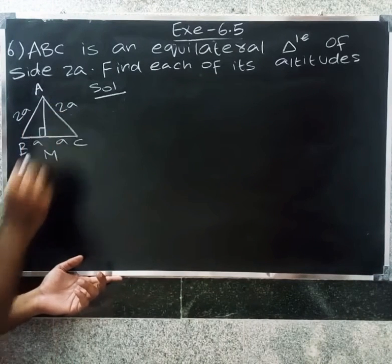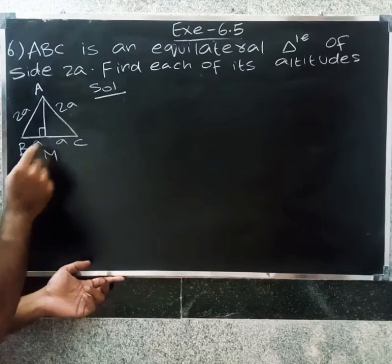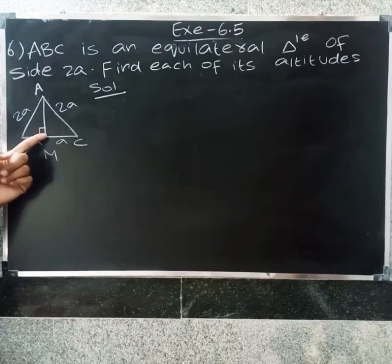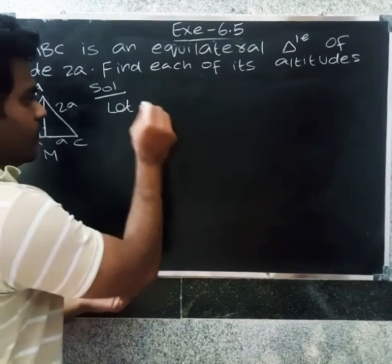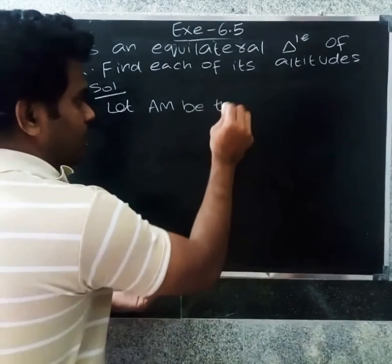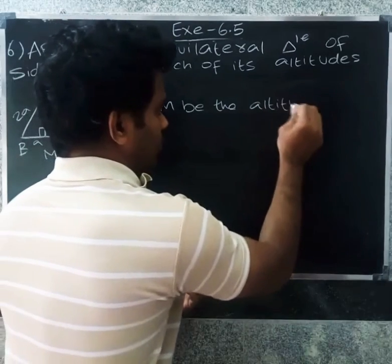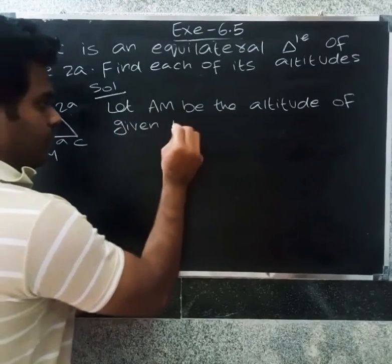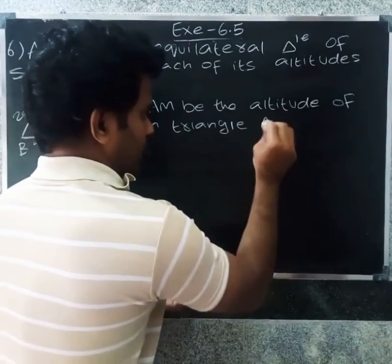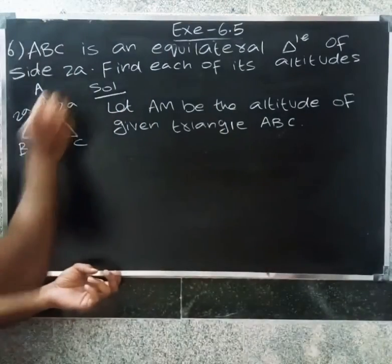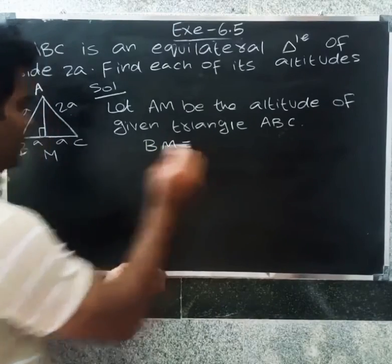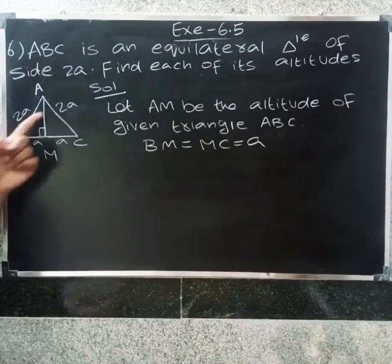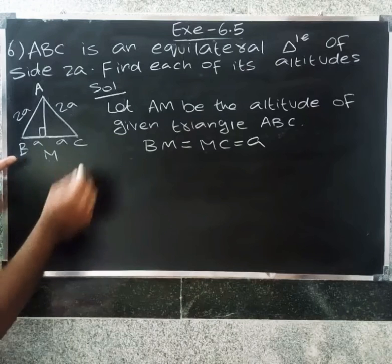So what we need to do is find AM. This is the center. BM is a part of BC, and MC is a part of BC. Let AM be the altitude of the given triangle ABC. On the other hand, BM equals MC. Since BC equals 2A, BM and MC each equal A.